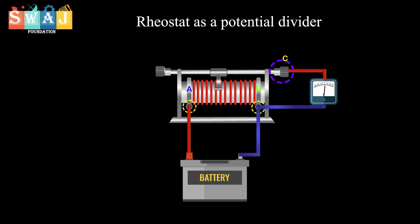If the sliding contact is moved towards A, the resistance decreases. A rheostat can also be used as a potential divider. For this, a potential difference V is applied across the ends A and B of the rheostat with the help of a battery. As the sliding contact C is moved towards end B, the length and hence the resistance R of the portion BC decreases, so the potential difference between B and C decreases. On the other hand, if the sliding contact C is moved towards end A, the output voltage between B and C increases.